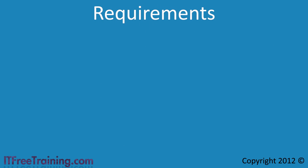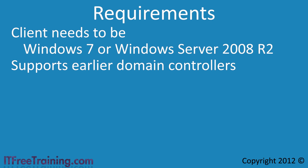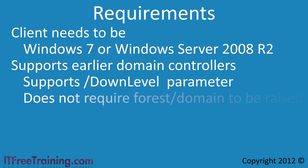To start using offline domain join, you first need to meet a number of requirements. The first is that the client needs to be running Windows 7 or Windows Server 2008 R2. For the domain, offline domain join supports earlier domain controllers than Windows Server 2008 R2. By default, offline domain join will attempt to contact a Windows Server 2008 R2 domain controller. If you experience any problems, you can use the down-level switch, which will force offline domain join to use an earlier domain controller. Since offline domain join supports earlier domain controllers, you do not need to raise the domain or forest functional levels.